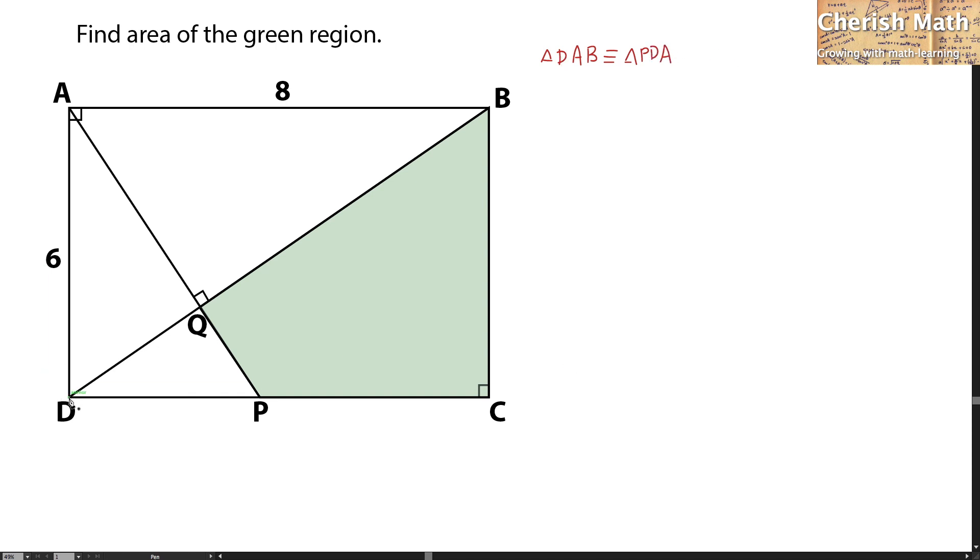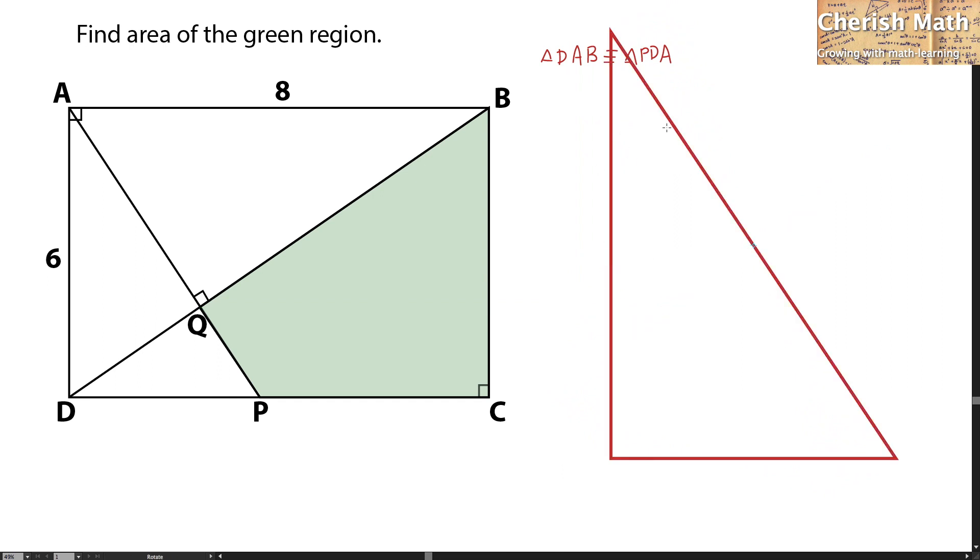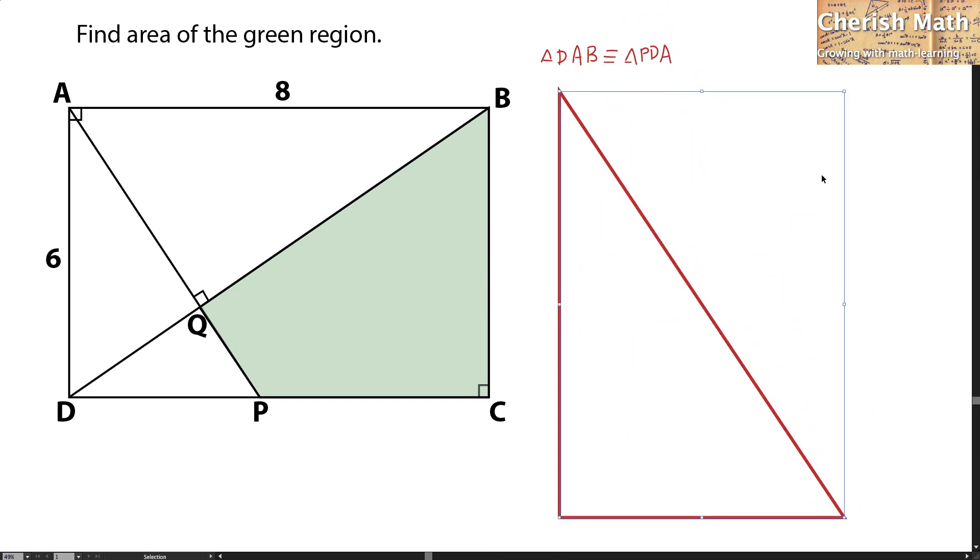Let me mock up triangle DAB and this is the shape. Now, let me rotate the shape. It is now in portrait mode. Let me label the corners DAB and the length of the respective sides.